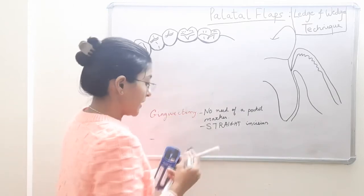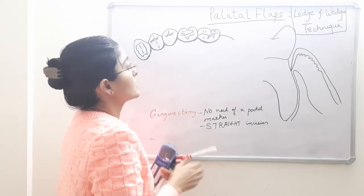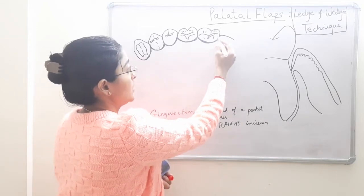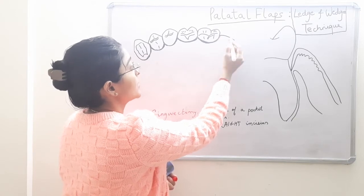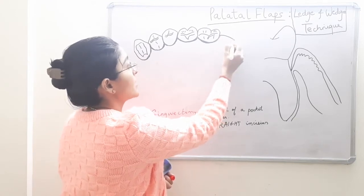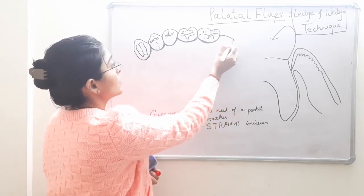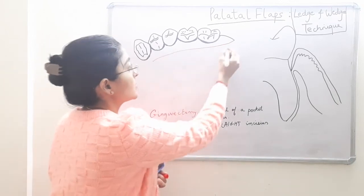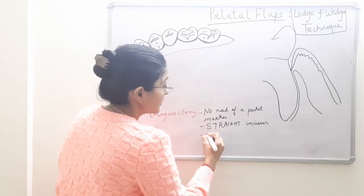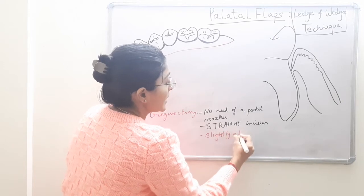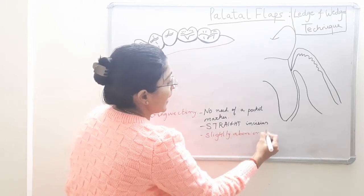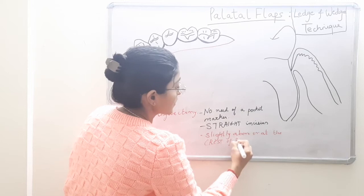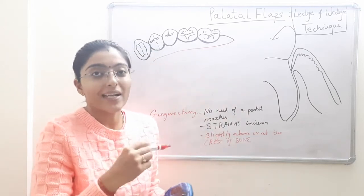Second difference: straight incision — straight incision gingivectomy and not a beveled or scalloped incision gingivectomy. We will begin from the distal end of the terminal portion, just to include the distal wedge along with it. The main point about this straight incision is it should be slightly above or at the crest of the alveolar bone. This is an important point; we cannot give it randomly anywhere.